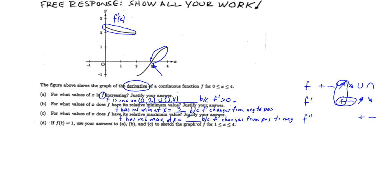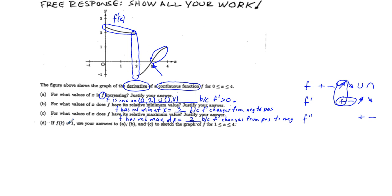For Part C, where do we have a relative maximum? At x equals 2 is where we see the change from above the x-axis to below all of a sudden. So x equals 2 is where we have our relative maximum, because f prime changes from positive to negative. Note that f is a continuous function even though the first derivative is not continuous. Now Part D says: if f of 1 equals 1, use your answers in parts A, B, and C to sketch the graph of f between 1 and 4.